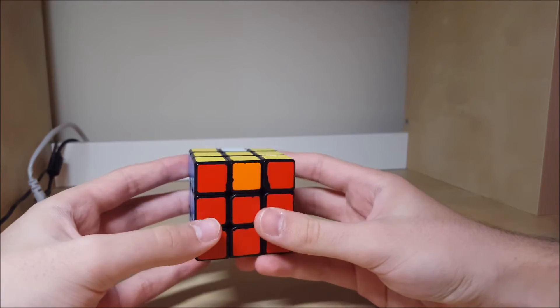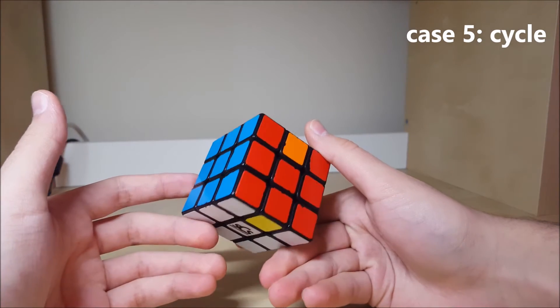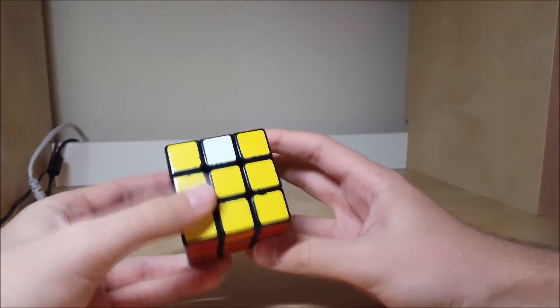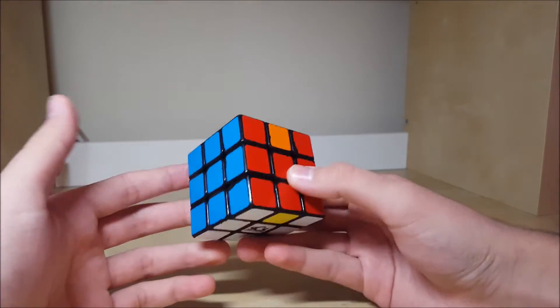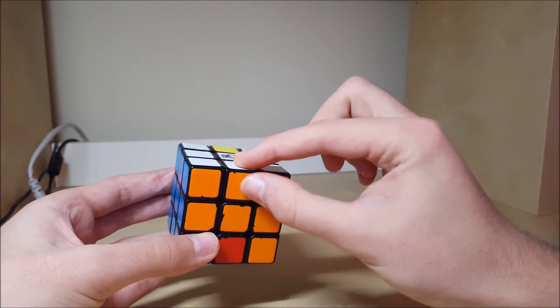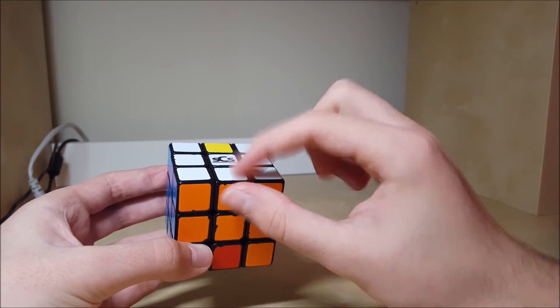The last edge permutation case is called the cycle, and what it is is basically a pure three cycle, like the ones you use in blind or FMC. When you look around the cube, it'll just be a bunch of random things, and at first it won't seem like there's any pattern here,